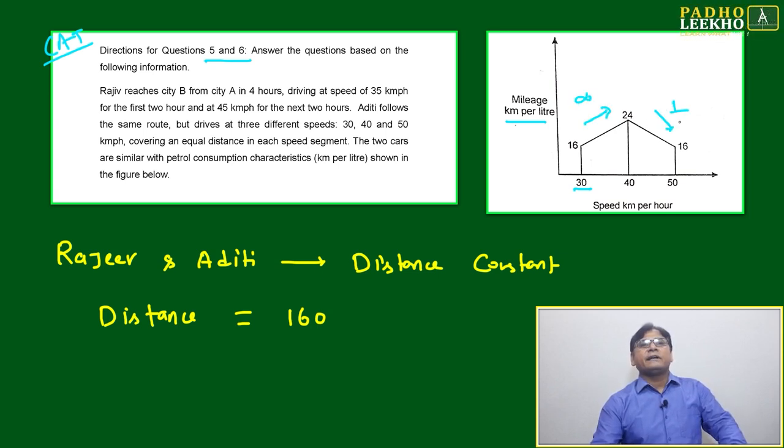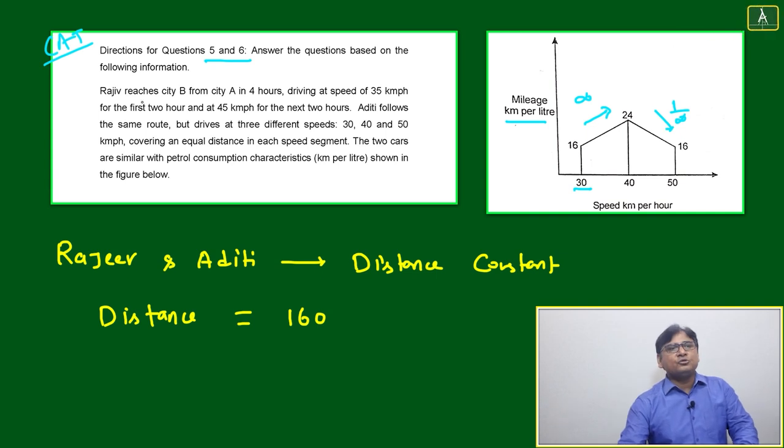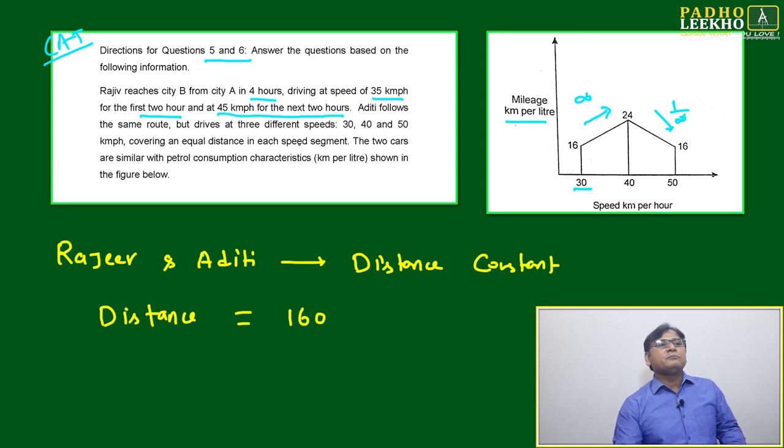Now it is easy to understand. We have to read the story because we have to take the data based on that. Rajiv reaches city B from city A in four hours, driving at the speed of 35 kilometer per hour for the first two hours and 45 kilometer for the next two hours. Total distance we can calculate very easily: 35 into 2 plus 45 into 2, it will be 160 kilometers.